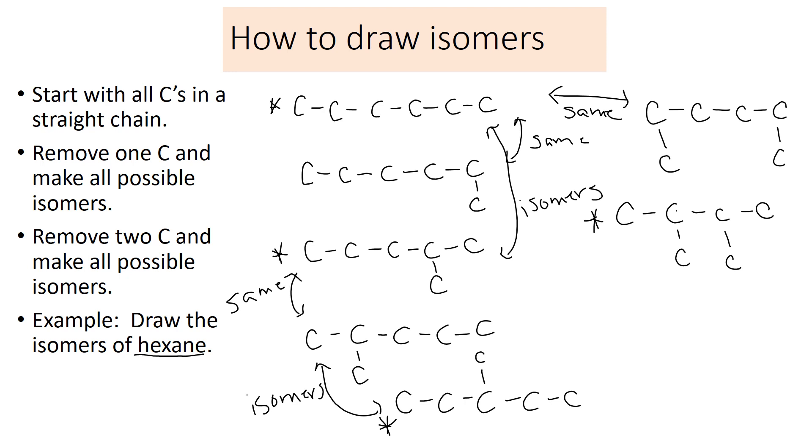If I put one carbon on either end and leave one on the middle carbon, I end up with one we already have. For example, if I did this one and put one here and one on the end, that's the same as this one. These are the same. That's not a new isomer.